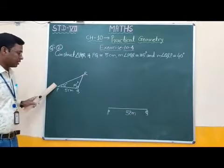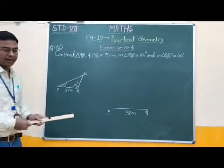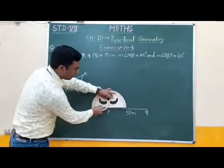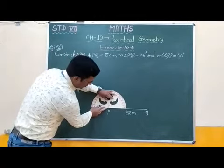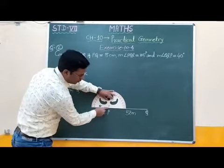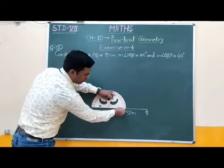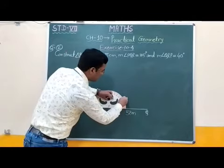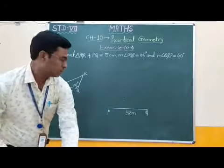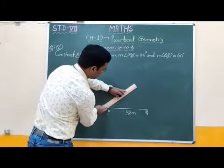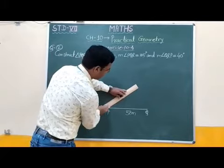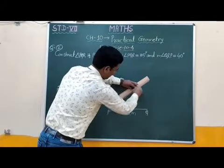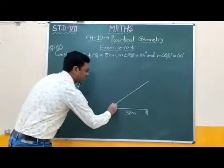Now students, at vertex P we draw a 35 degree angle using the protractor. We place the midpoint at vertex P and use the inner scale: 10, 20, 30, 35 — marking this point. We then join these two points with the help of a scale. This angle is now 35 degrees.